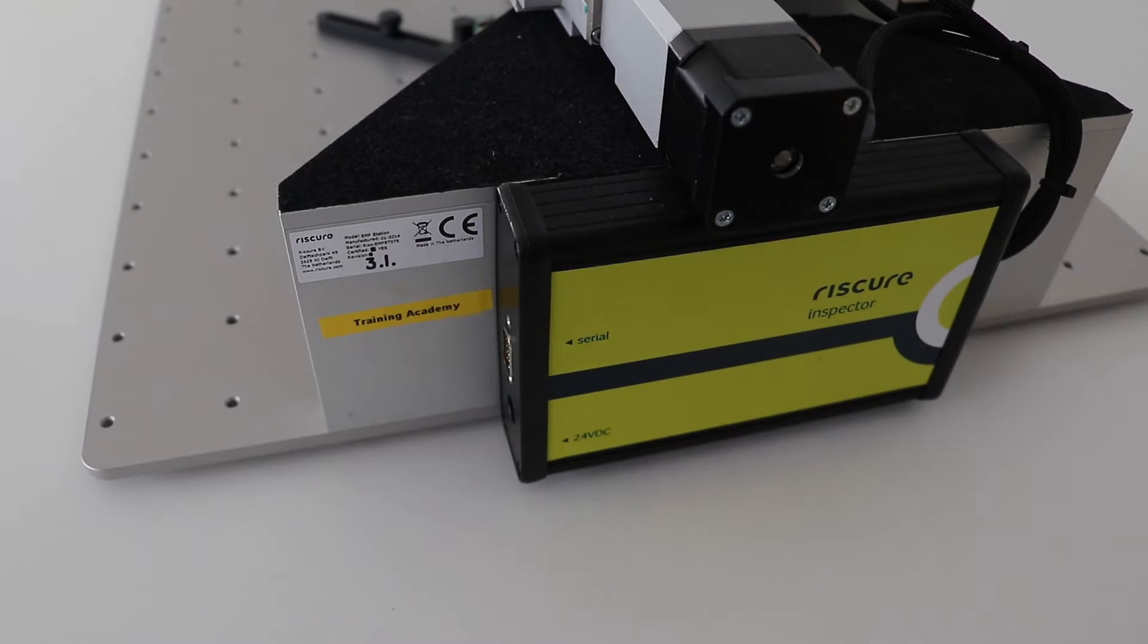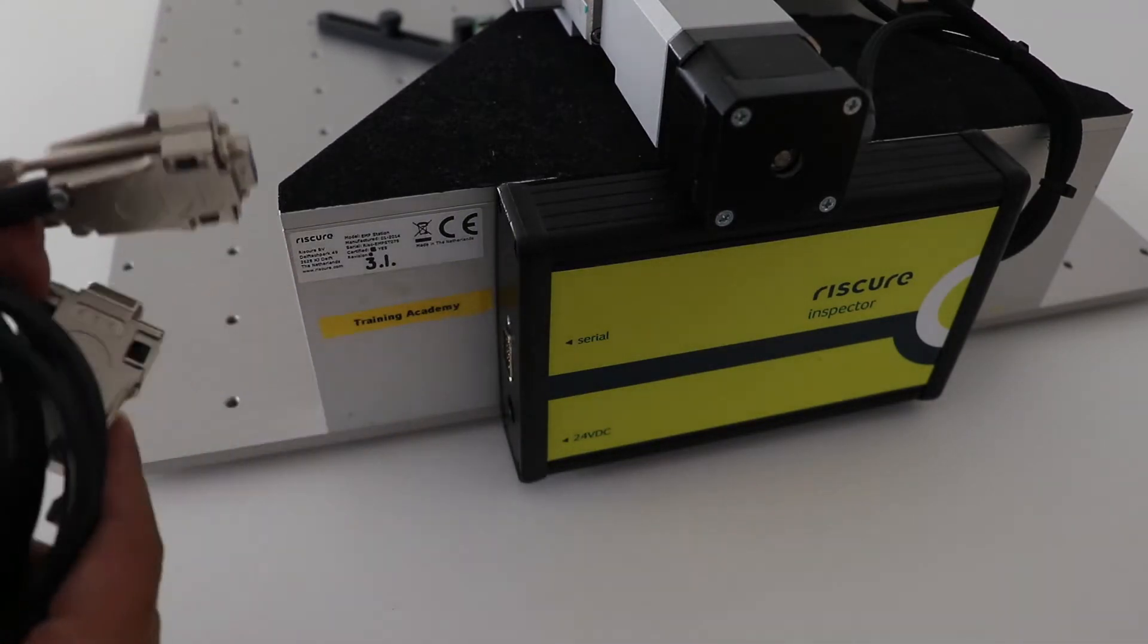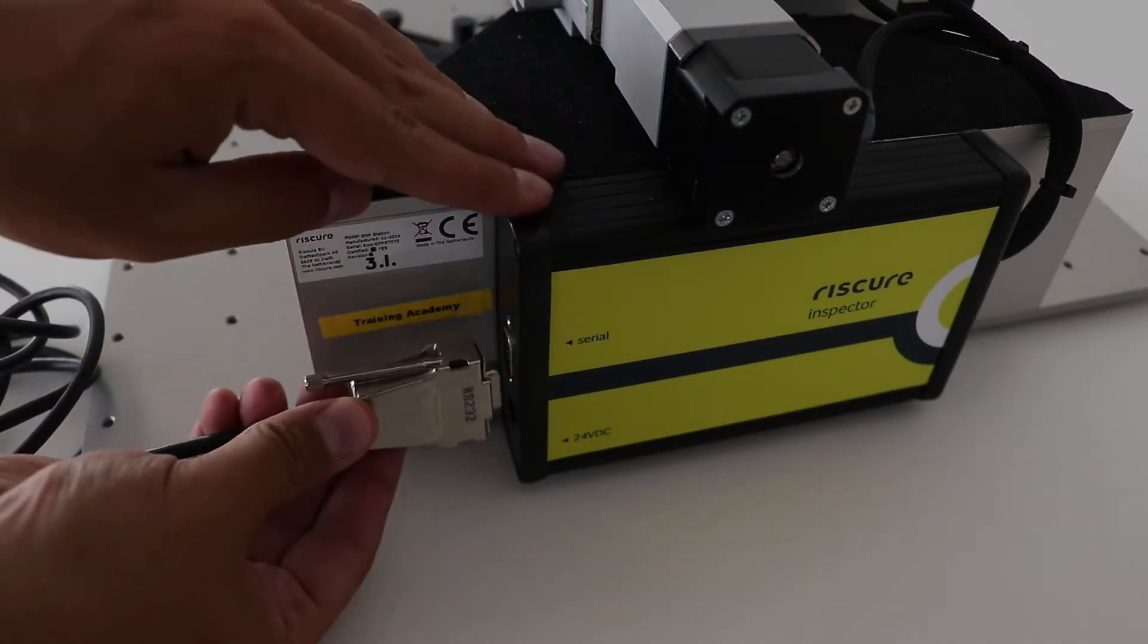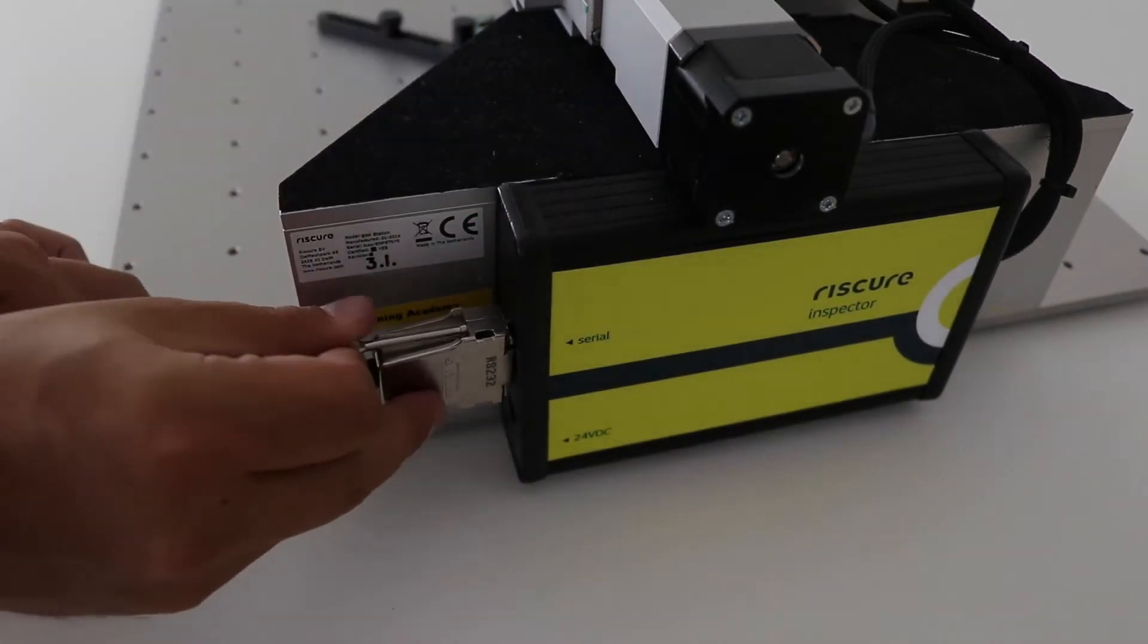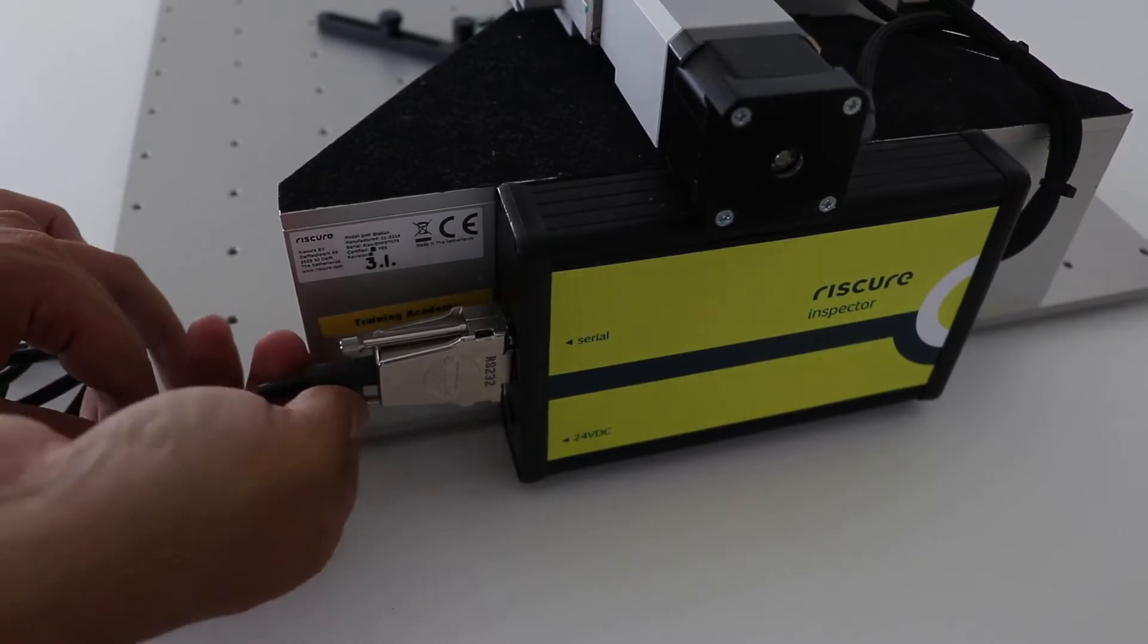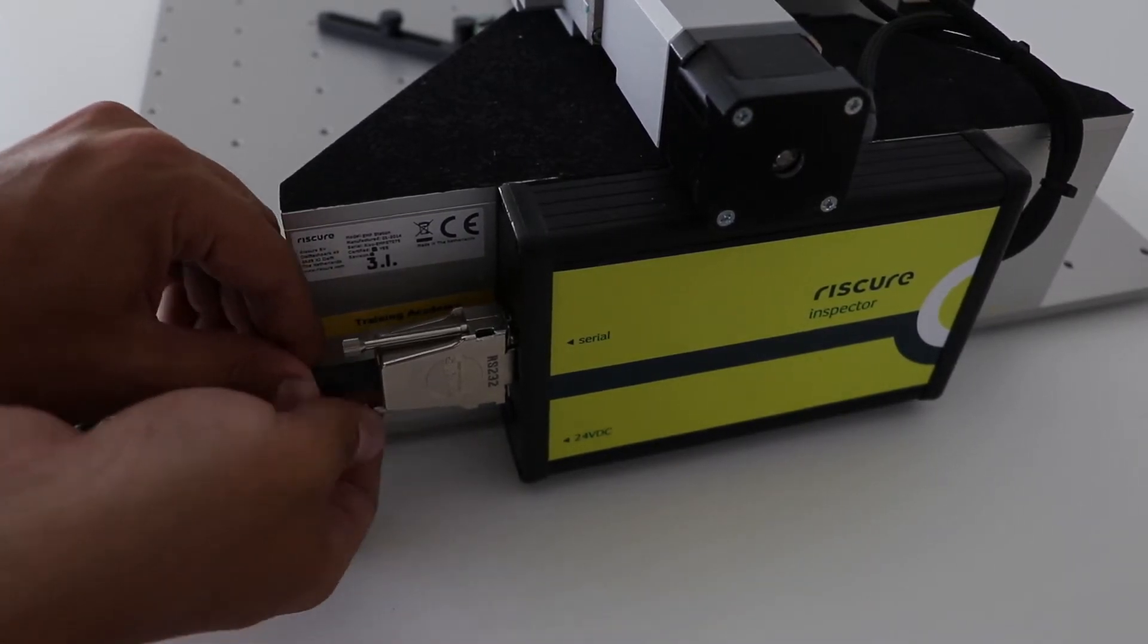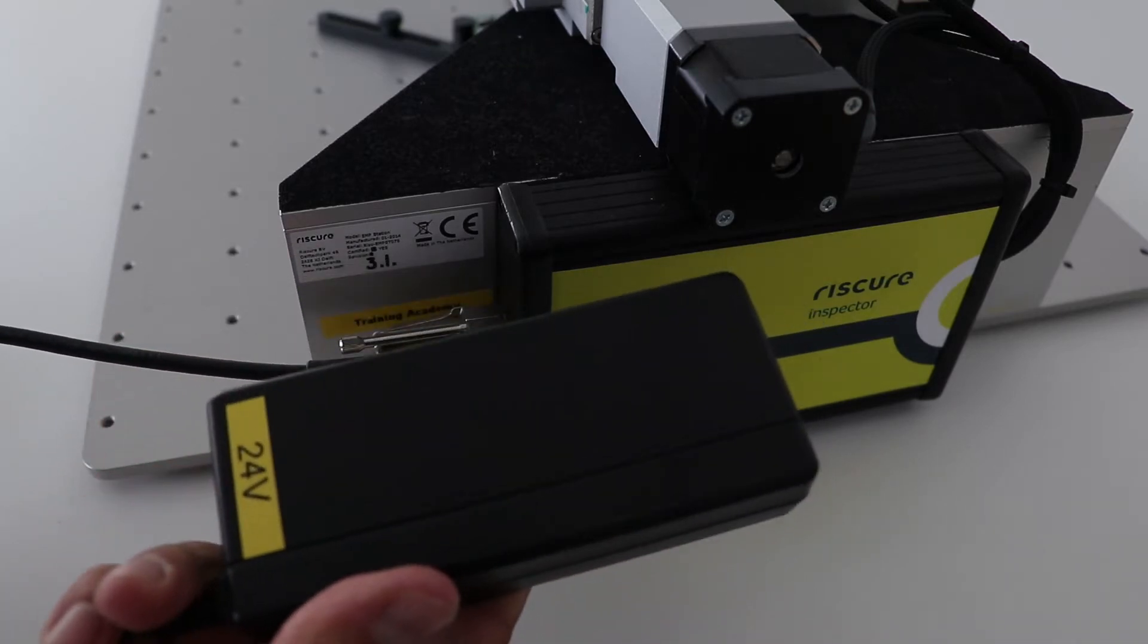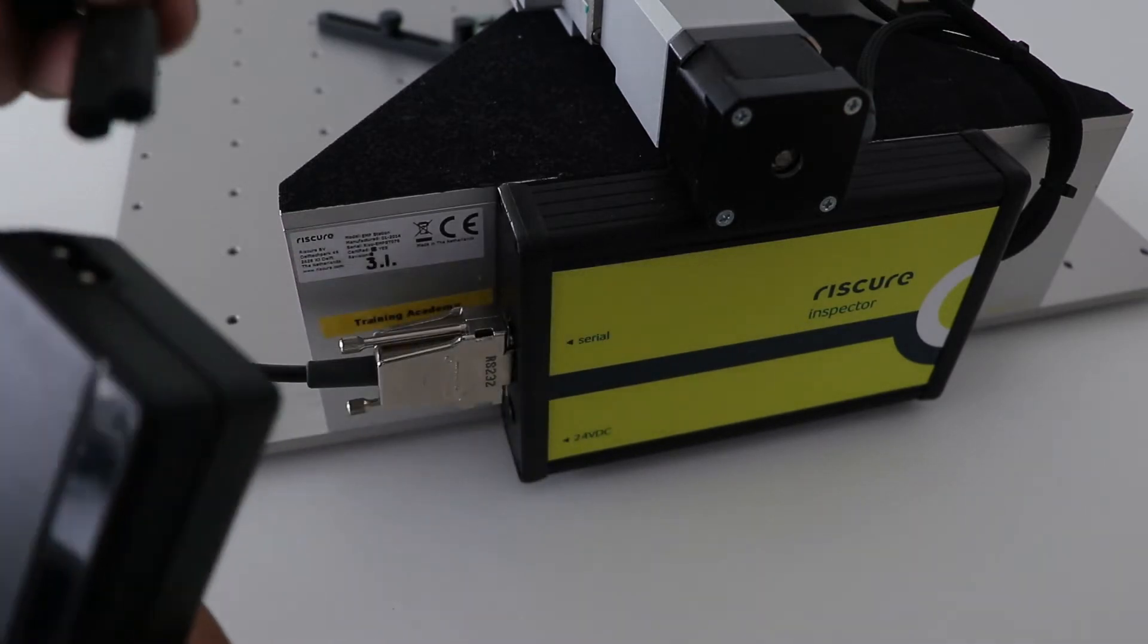To enable the probe station, we use the communication cable to connect it to the computer. And then, we connect it to the power using the power supply unit of 24 volts.